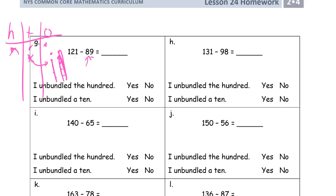So I unbundle the 100 into 10 tens and cross out 8 of them, leaving 2. But there's also that other ten from earlier — so I actually have 3 tens. Very important to keep this organized so you don't mess up your count. I have 3 tens left and 2 ones — that's 32. I unbundled the 100 and unbundled a 10.